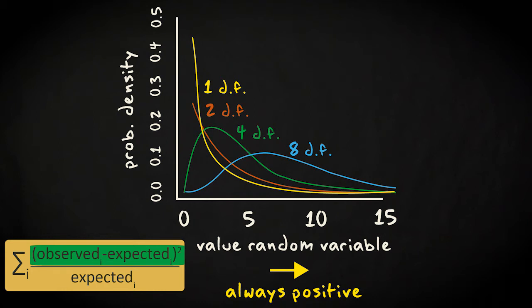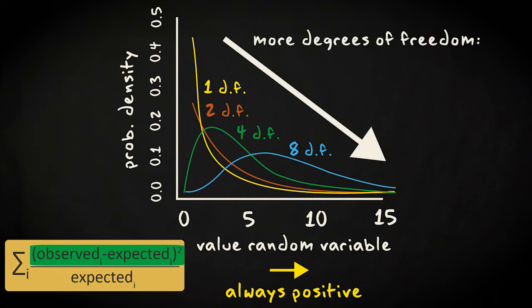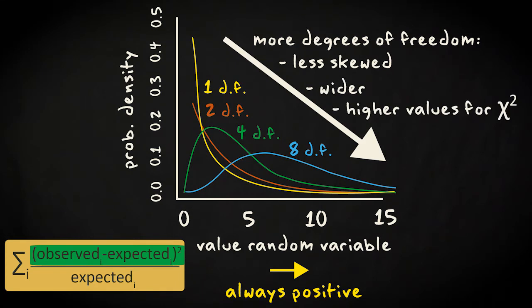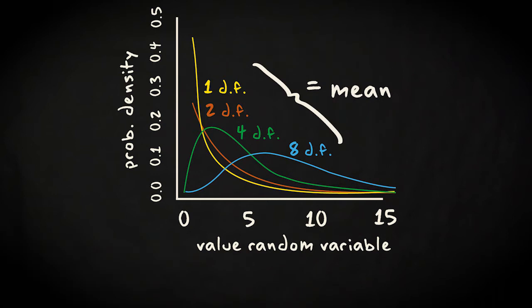You can also see that with a higher value for the degrees of freedom, the distribution becomes less skewed, but also wider, and it moves to the right. In fact, the degrees of freedom parameter represents the mean of the distribution.